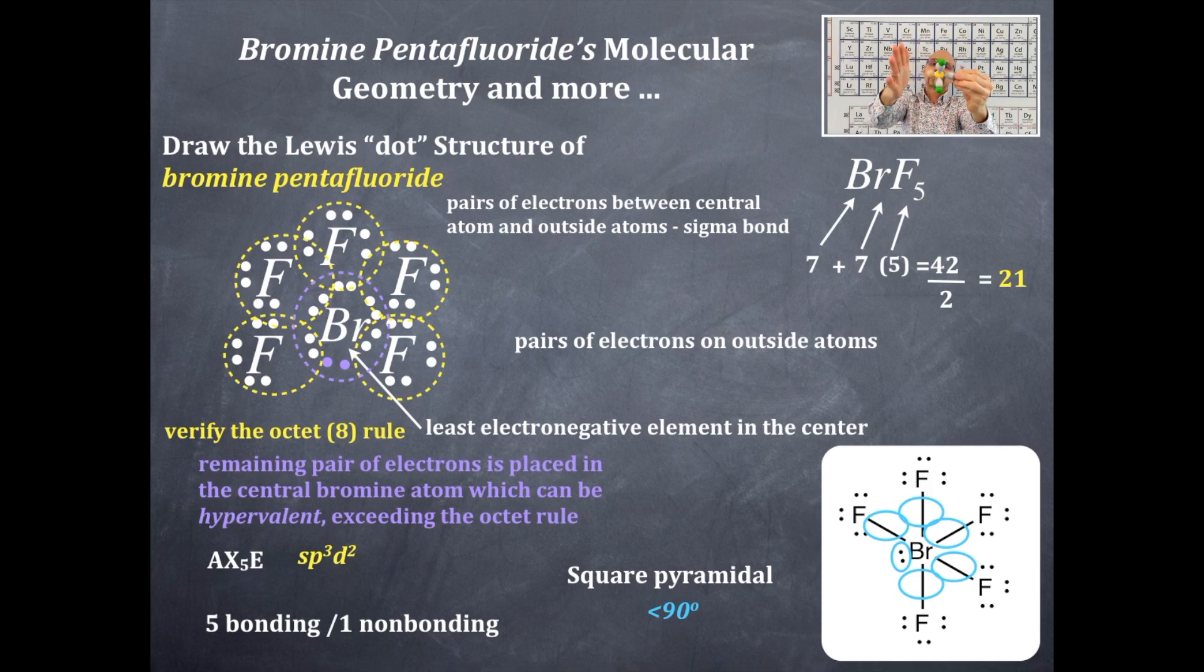But is this molecule symmetrical or asymmetrical? Well, to me it's obvious. This side is different than this side. Square pyramidal is always asymmetrical. Square pyramidal is always polar.